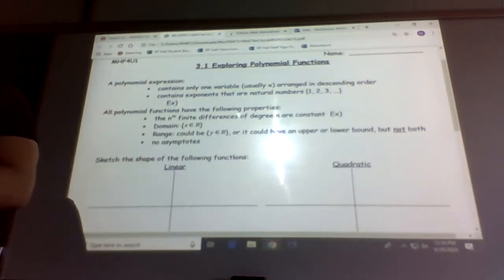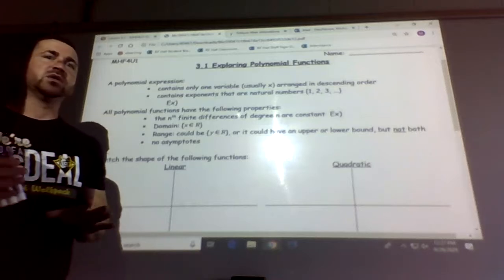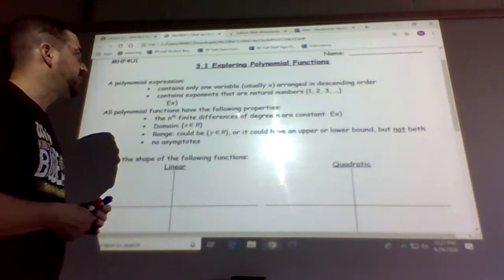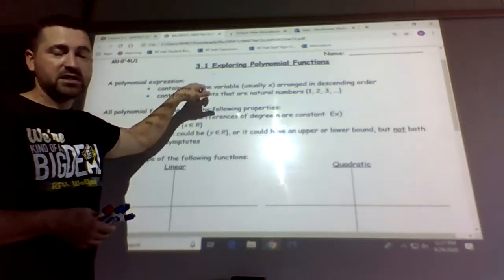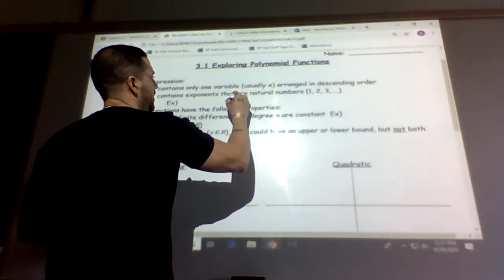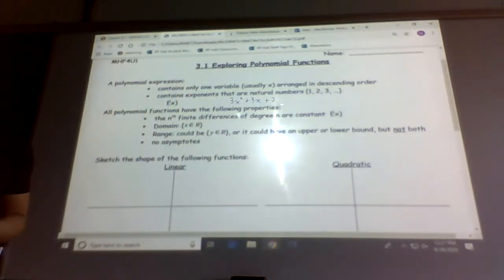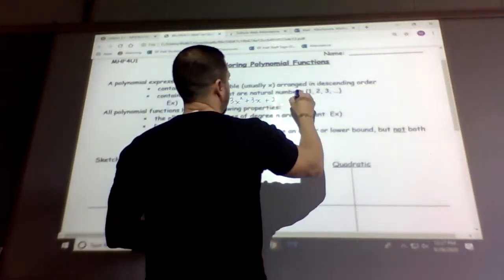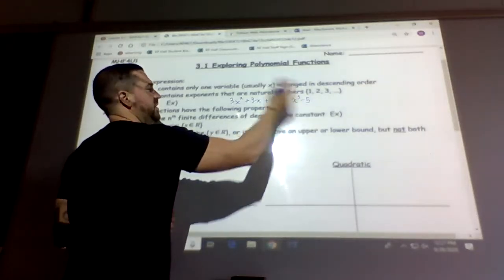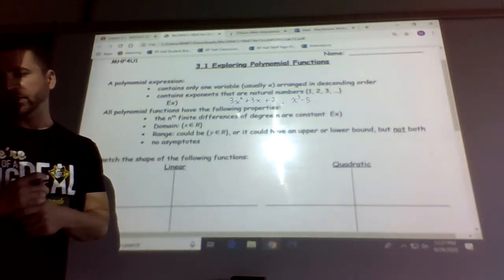We're looking at polynomial expressions as opposed to equations. Expressions don't have an equal sign whereas an equation has an equal sign. So we're doing a polynomial expression. It contains only one variable, usually it's x, usually in descending order. So something like 3x squared plus 3x plus 2 would be one of the examples. You could have x to the power of 3 minus 5.